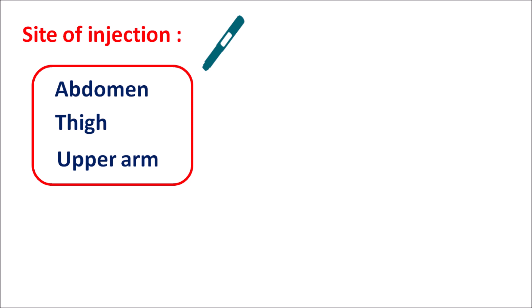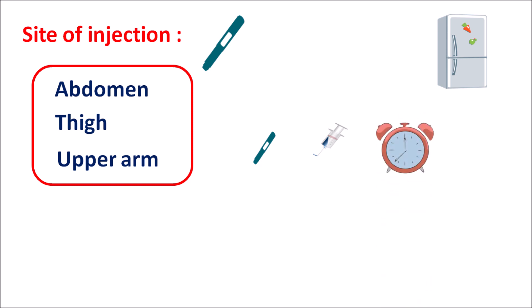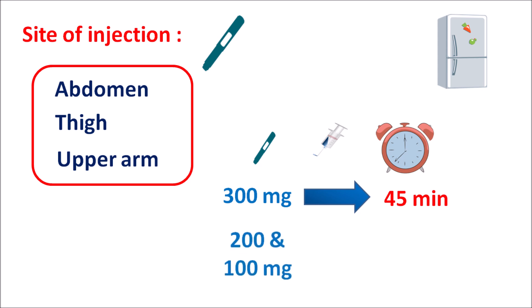Precautions should be taken because the dupilumab injection is stored in the refrigerator. It is available as a pre-filled pen or a pre-filled syringe. Both should be taken out of the refrigerator and kept at room temperature for a specific time based on the dose. Formulations with 300 mg require at least 45 minutes at room temperature, while those with 200 mg and 100 mg require at least 30 minutes of stabilization.